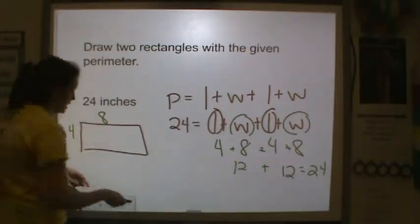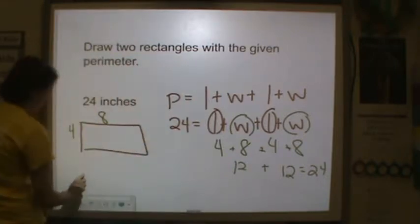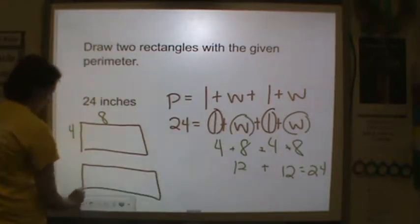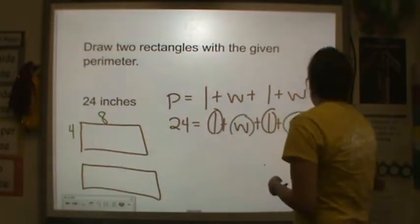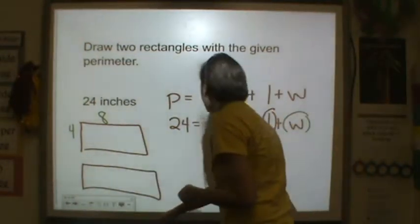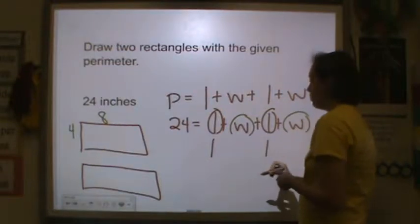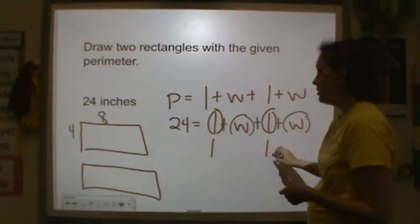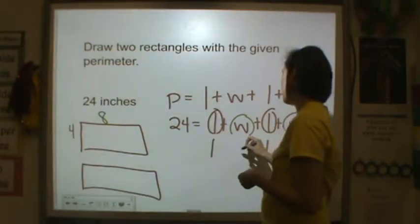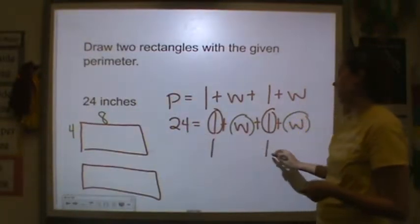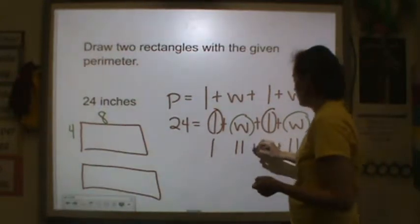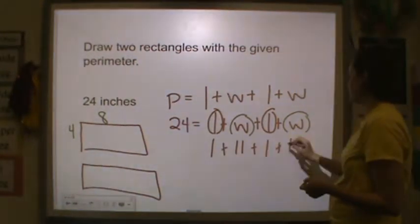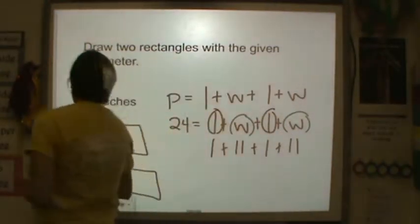Now, let's try another one. Let's try it when my width is 1. 1 and 1, so 1 and 1 is 2. So I need 2 more numbers that will get me to 22, because 1 and 1 is 2. Well, what about 11? 1 plus 11 plus 1 plus 11, that's equal to 24.